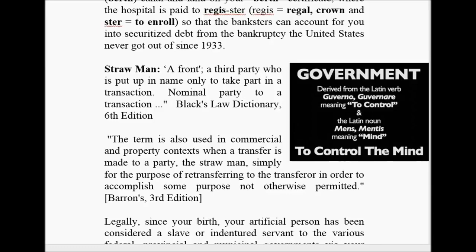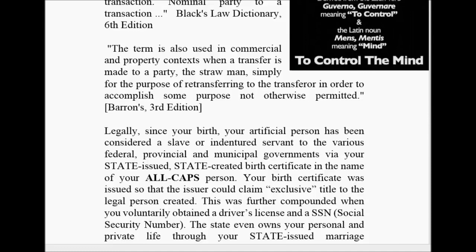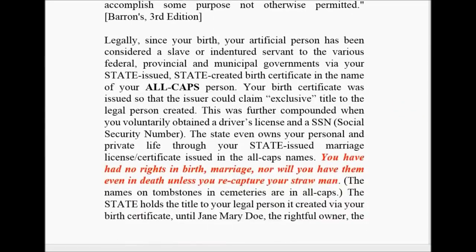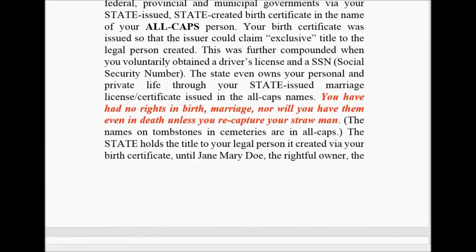A government — 'govern' means to rule or control. 'Ment' is for Mensa or mind — to control the mind. They tell us what they're doing. A straw man is a front. A third party has put up a name only to take part in the transaction. The straw man is also used in commercial and property context when a transfer is made to a party for the purpose of re-transferring in order to accomplish some purpose not otherwise permitted. We're a legal fictitious entity. Since your birth, your artificial person has been considered a slave or indentured servant to the various federal, provincial, and municipal governments via your state-issued, state-created birth certificate and name of you in all caps. Your birth certificate was issued so that the issuer could claim exclusive title to the legal person created.